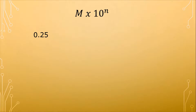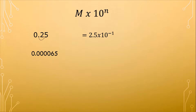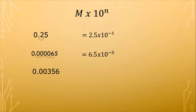How about 0.25? It is less than 10, but 0.25 is not greater than or equal to 1. So we move the decimal point to the right, giving us a negative exponent. That gives us 2.5 times 10 raised to the negative 1 power. Another example: 0.000065 — counting the places: 1, 2, 3, 4, 5 — gives us 6.5 times 10 raised to the negative 5. Another example is 0.00356: 1, 2, 3 — that gives us 3.56 times 10 raised to the negative 3 power.